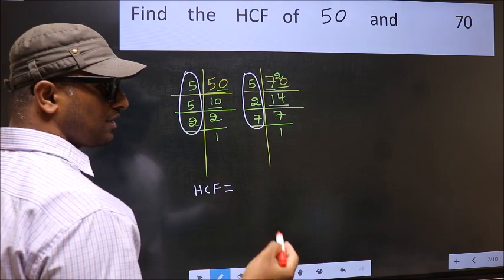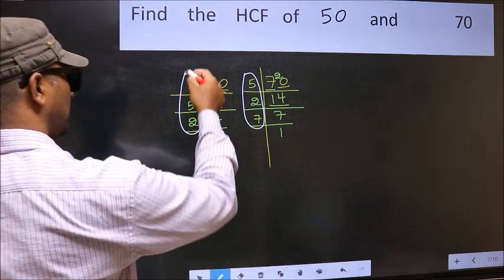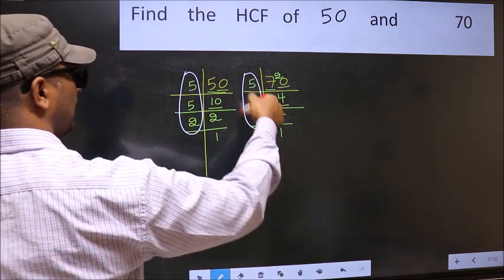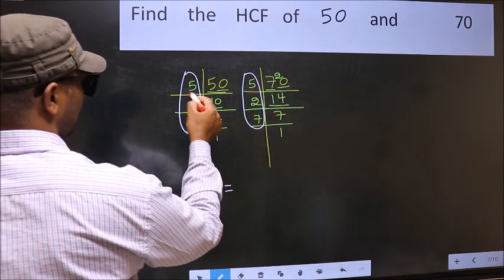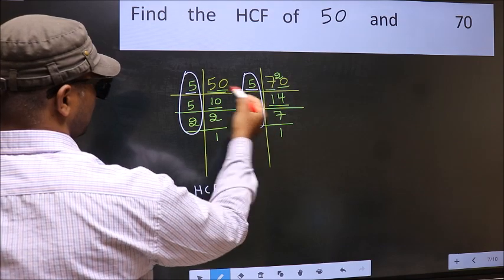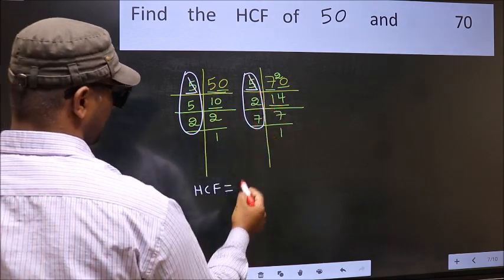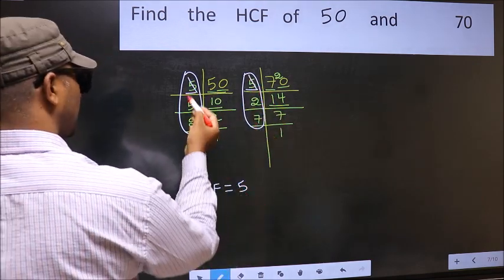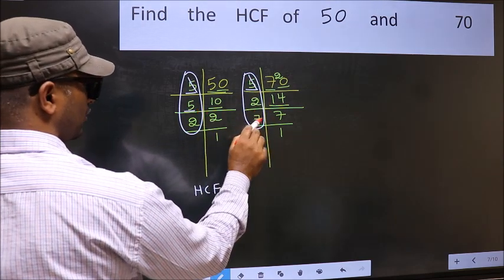So now let us find the numbers which should be present here and here. Starting with the number 5. Do we have 5 here? Yes. So cut 5 right here. Next number 5. Do we have 5 here? No.